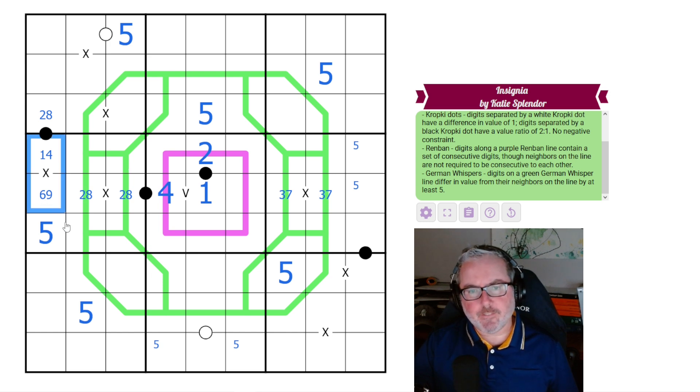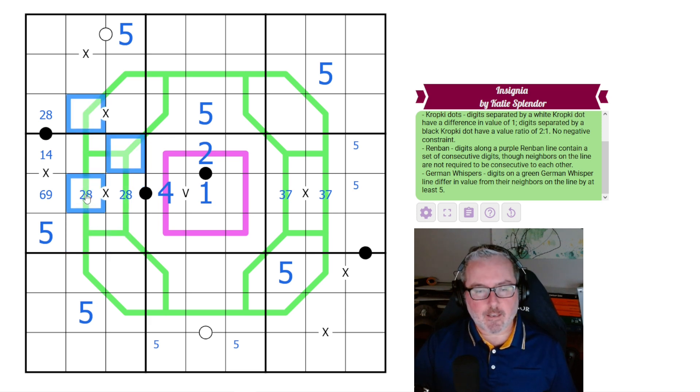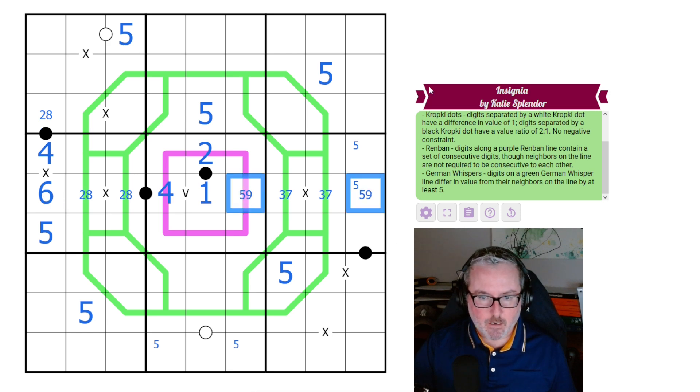Oh, we can simplify this one a lot quicker. I think, yes, we cannot put a 4 or a 6 on any of these German Whisper spaces because if we put a 4 here, we have to have 9s on all of these. We've already said that can't happen. If we have to have a 6, we have to put a 1 on all of these. Those can't happen either. Same goes for all of these. So this has to be 4 and 6. So therefore, this is 4. This is 6.